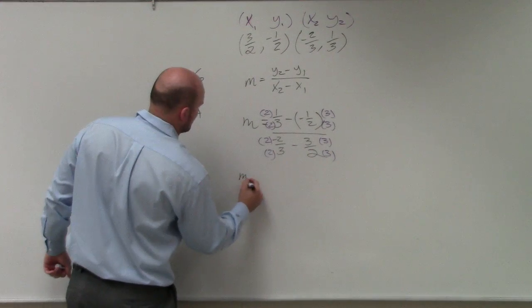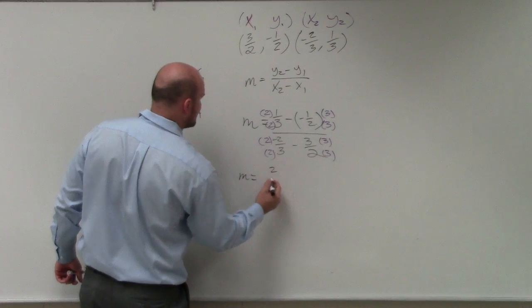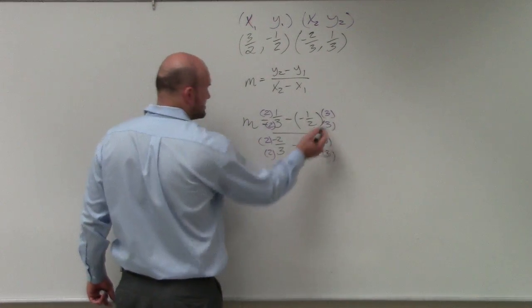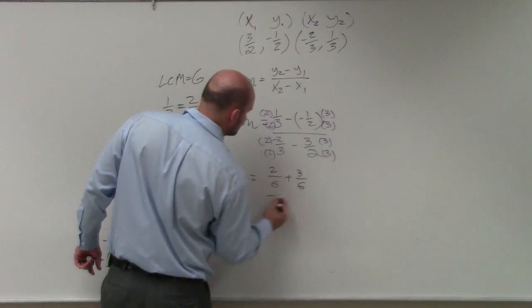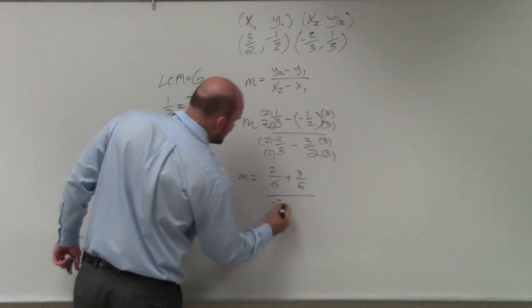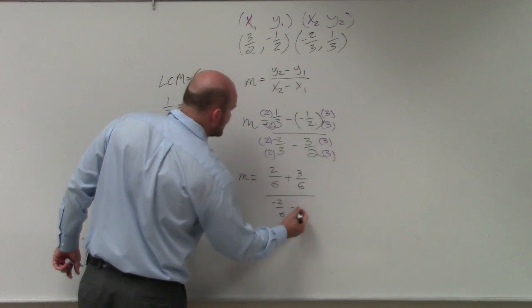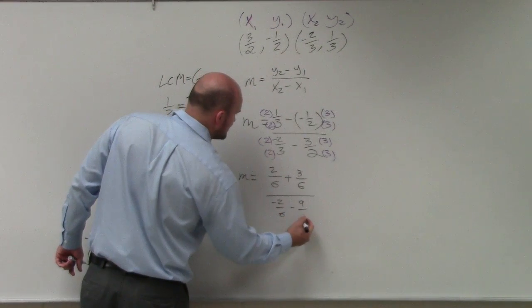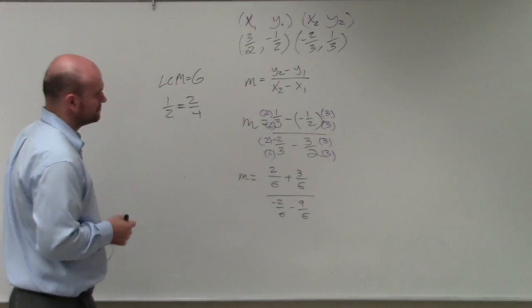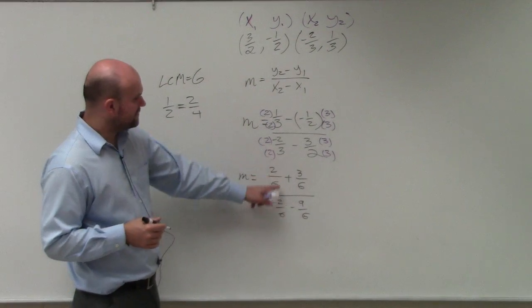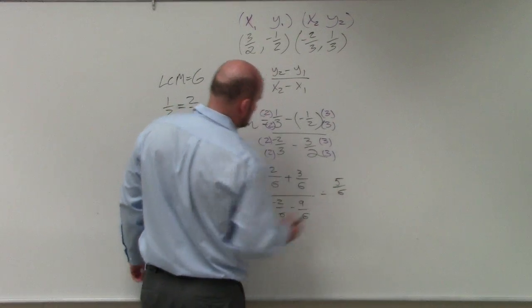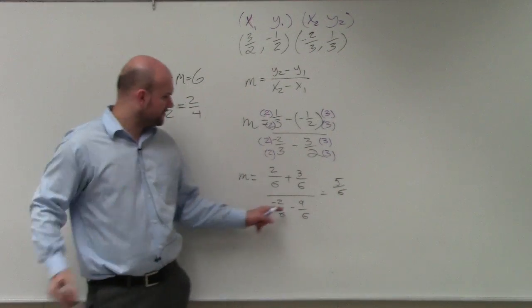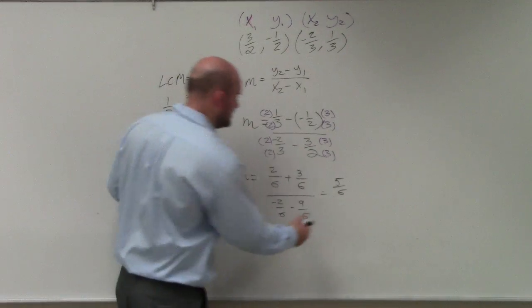So therefore, when I simplify my answer here, I have 2 over 6 plus, because minus a negative, I have 3 over 6, divided by negative 2 over 6, minus 9 over 6. So 2 over 6 plus 3 over 6 is going to equal 5 over 6. So I get something different than what we got over there. I'm getting 11 over 6.